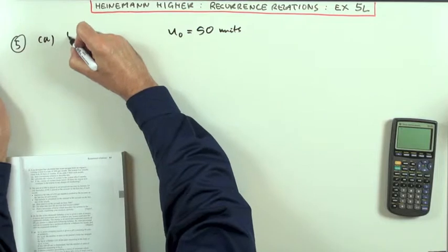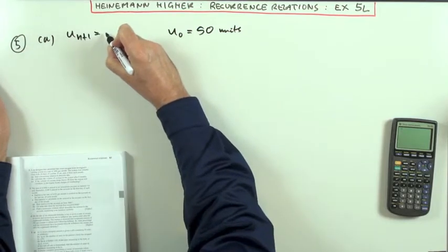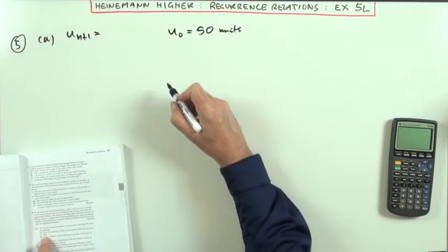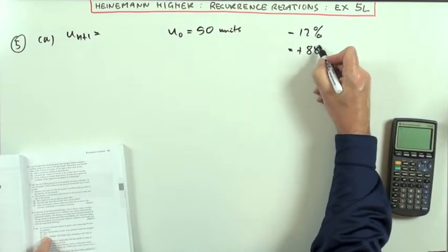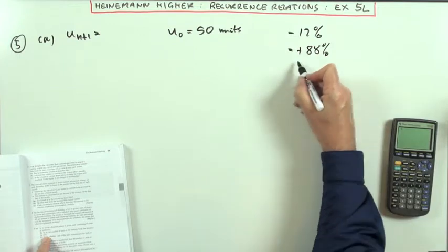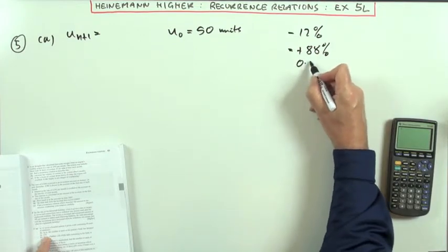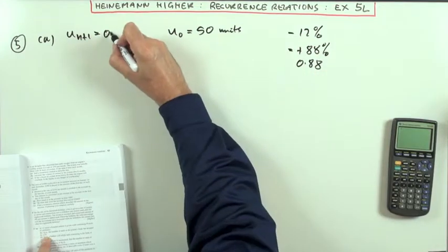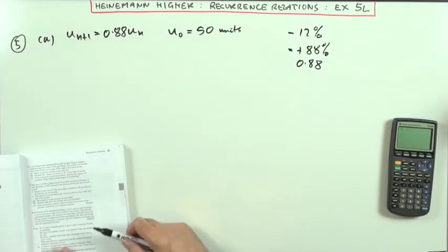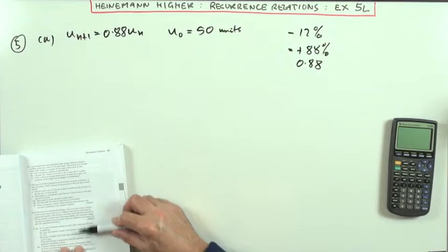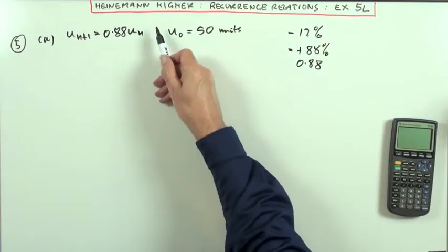Well the recurrence relation in this case is going to be this. Uₙ₊₁ is going to be, if you lose 12%, if you take off 12%, that means you've still got 88%, which in its decimal form is 0.88, so you've got 0.88 of what you had originally. And it doesn't mention anything about any changes taking place during those 6 hours, so there's no value added on.